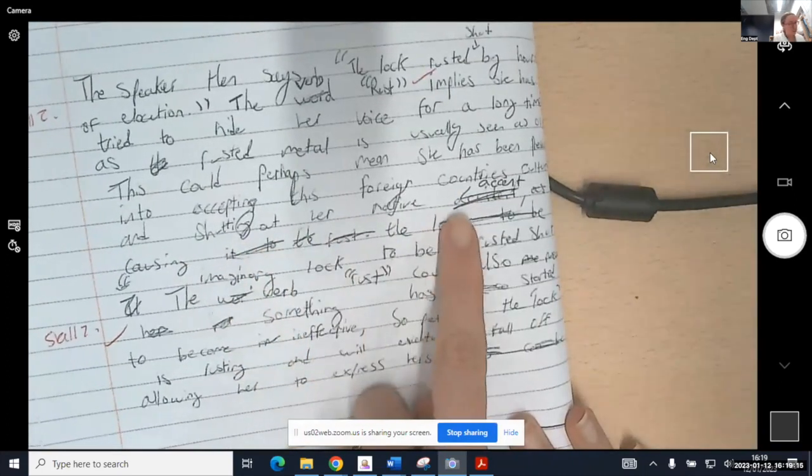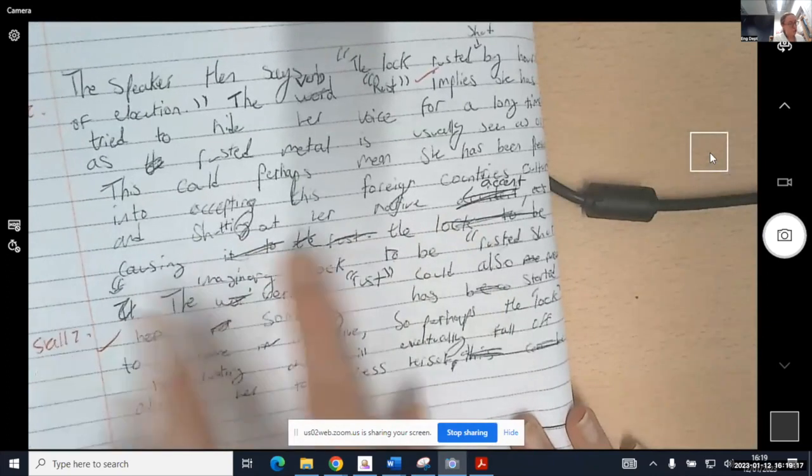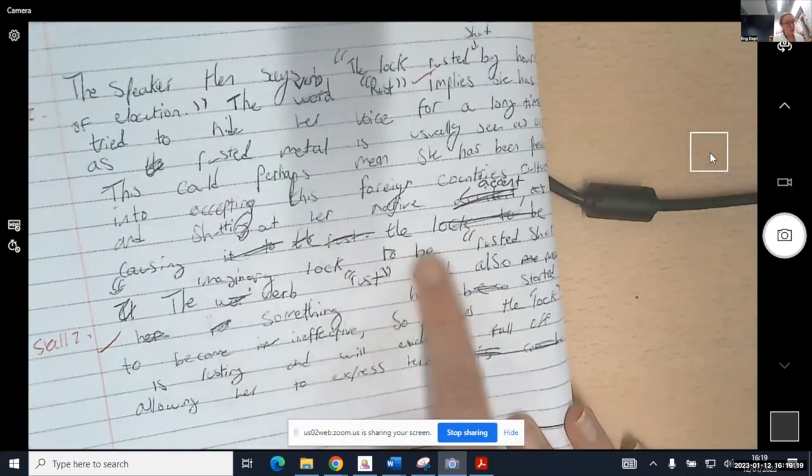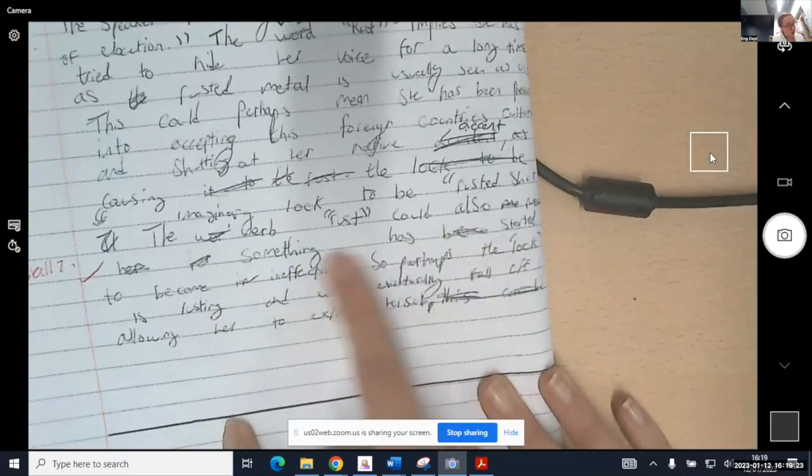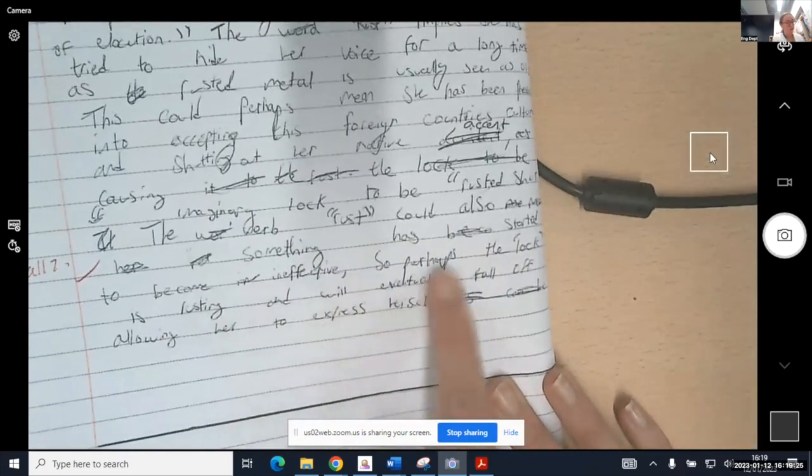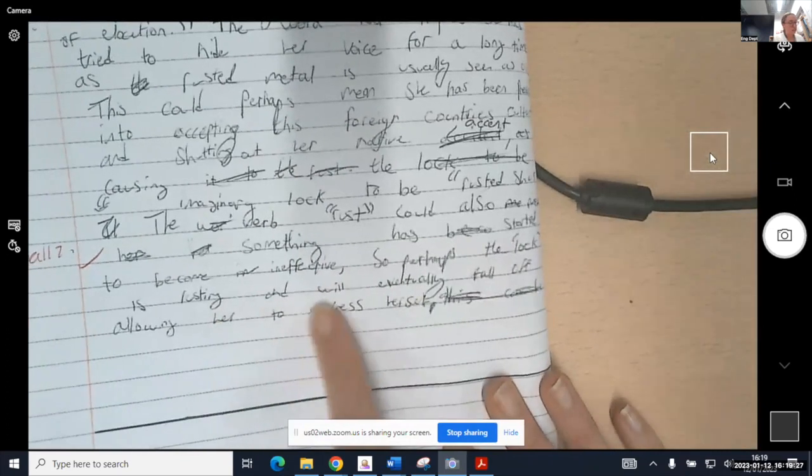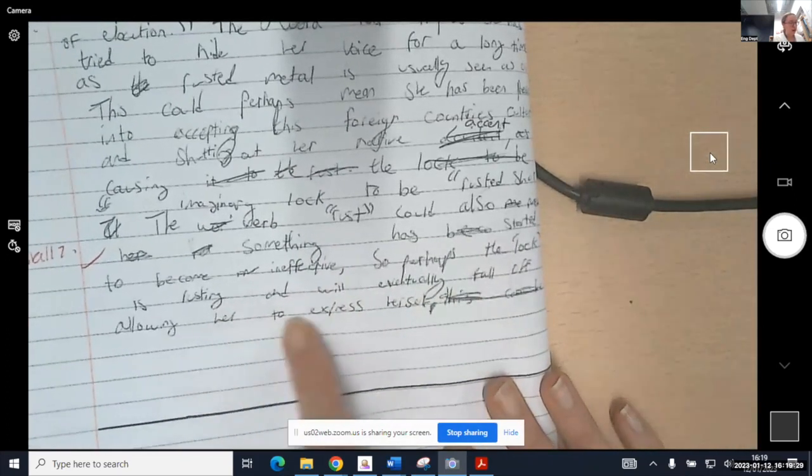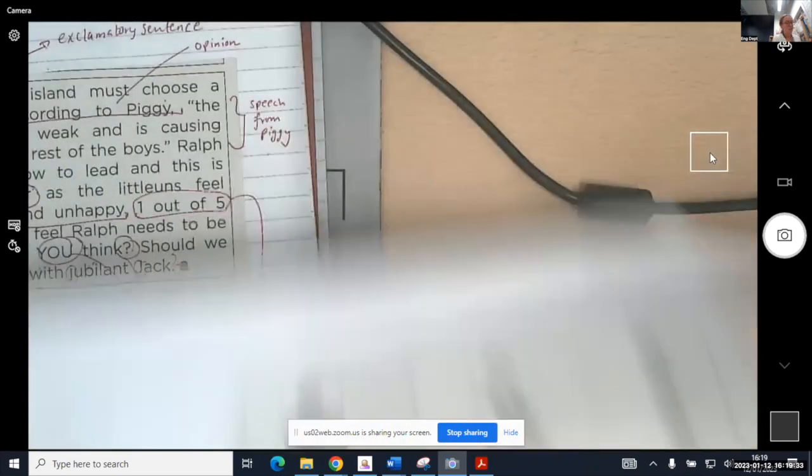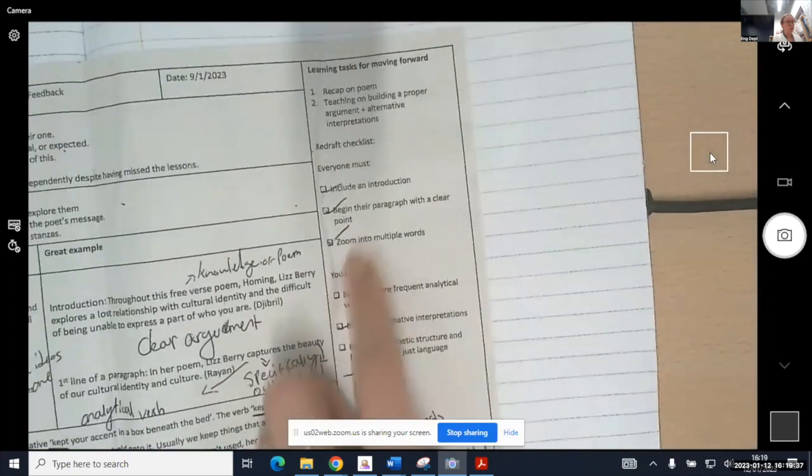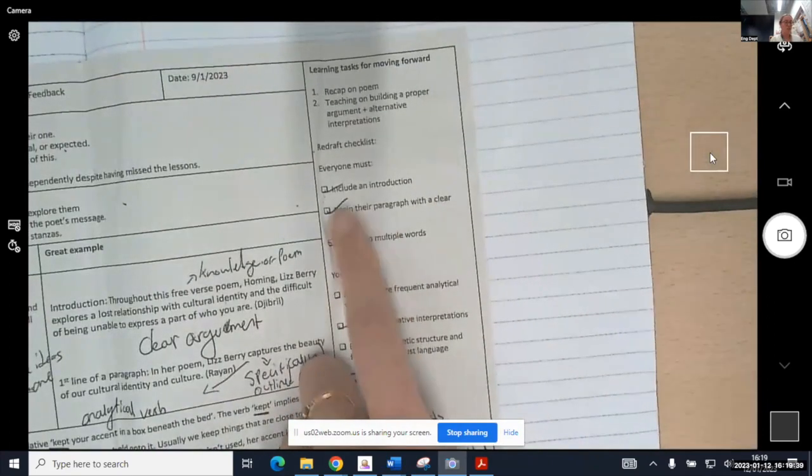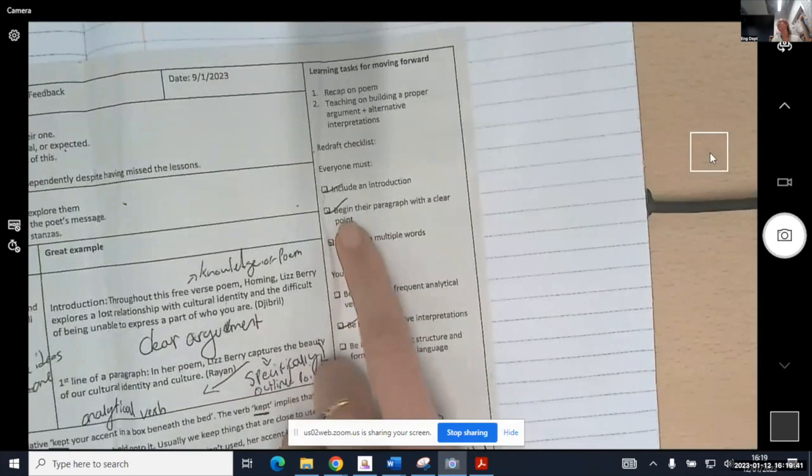This could perhaps mean she has been pressured into accepting this foreign country's culture and shutting out her native accent, causing the imaginary lock to be rusted shut. The verb rusted could also mean something has started to become ineffective, so perhaps the lock is rusting and will eventually fall off allowing her to express herself. So you can see there that he has then very much zoomed into his words. He also did begin with a clear point, although I didn't read it to you.